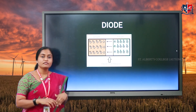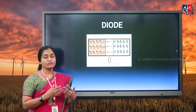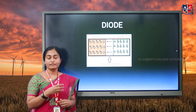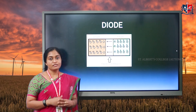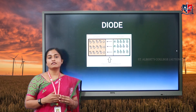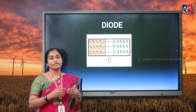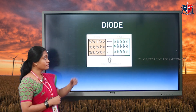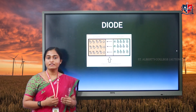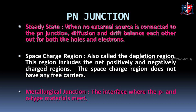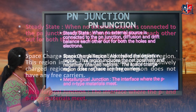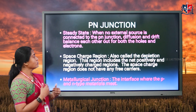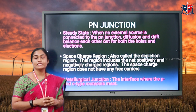In the PN junction, the depletion region — the charge-depleted region — means there are no mobile charges; there are immobile charges. Because of these immobile charges, a potential is created called the barrier potential. Without any external voltage source, a potential develops because of the immobile charges in the depletion region, which is termed the barrier potential. This barrier potential prevents further diffusion and recombination. In a PN junction, you can have a steady state where, when no external source is connected, diffusion and drift balance each other for both holes and electrons. This state is termed the steady state.